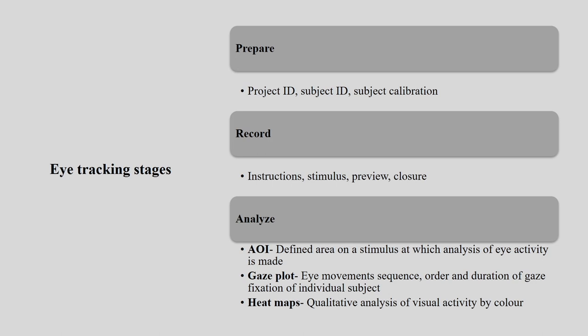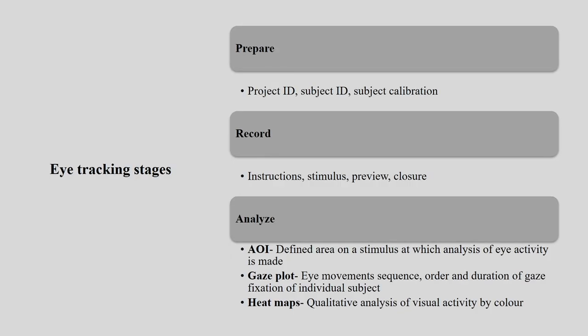To prepare: you create an ID and do the calibration first — that is the first requirement. Second, you do the recording — instruction, stimulus, preview — and conduct the experiment and close it. For analysis: AOI, gaze plot, and heat map can all be analyzed. For AOI, you define the area of stimulus at which analysis of the eye activity is made. For gaze plot, you get the eye movement sequence — order and duration of gaze fixation for each individual subject.